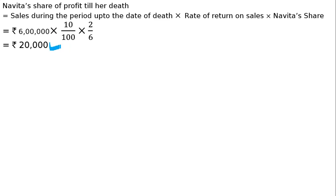Isma time period ka kuch nahi hoga. Kyunki 30th June ko death ho gaya, toh April se June — 3 mahine ka calculate karna chahiye, matlab iska profit. But yahan pe time basis mein nahi ho raha hai, yahan pe sales basis mein ho raha hai. Jitni sale hogi, utna profit. This is all about the explanation.